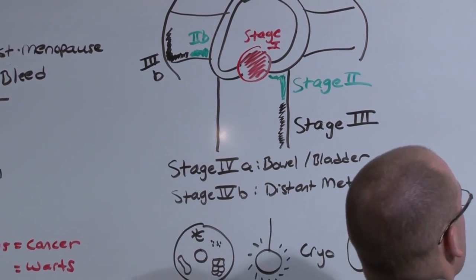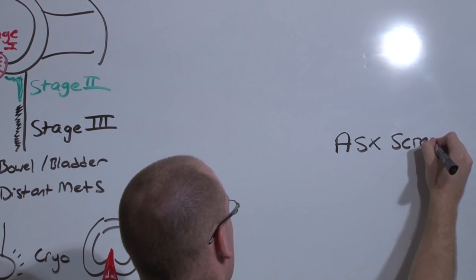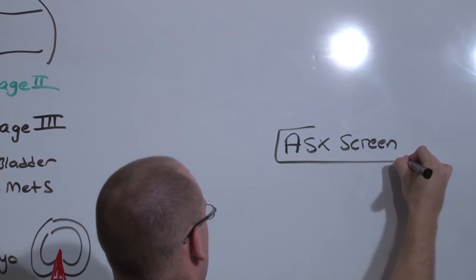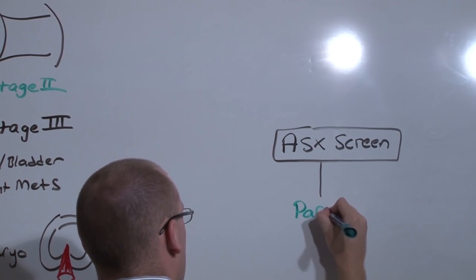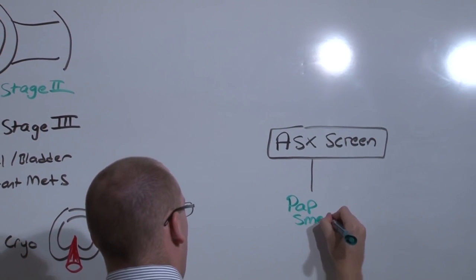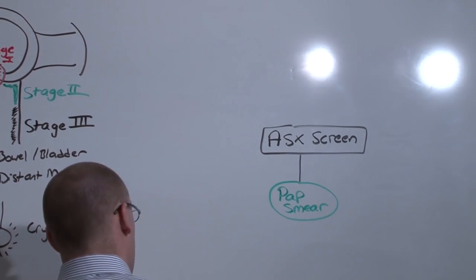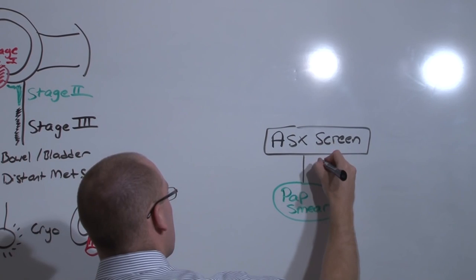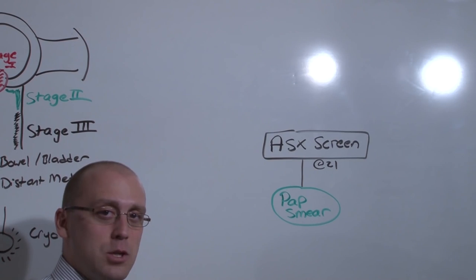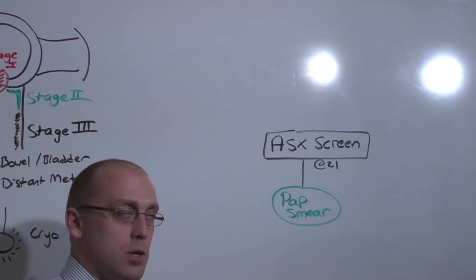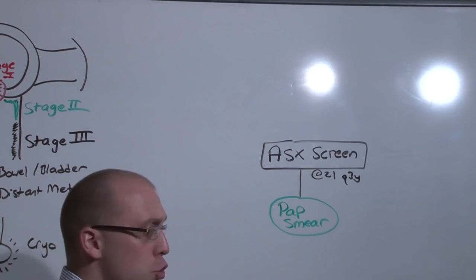Hopefully, what will happen is that she will come in for an asymptomatic screen, and that asymptomatic screen is performed with the pap smear. Most recent recommendations have made it incredibly easy. You begin at age 21, no more three years after the initial onset of sex. At 21, you begin doing pap smears, and you perform them every three years.